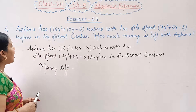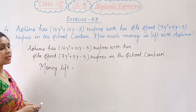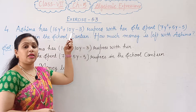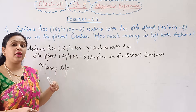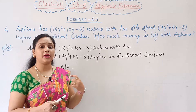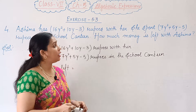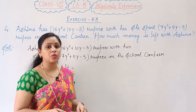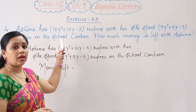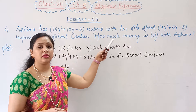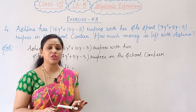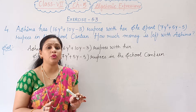Question number 4: Ashima has 16y squared plus 10y minus 3 rupees. This is a trinomial. She spent 7y squared plus 5y minus 5 rupees in the school canteen.